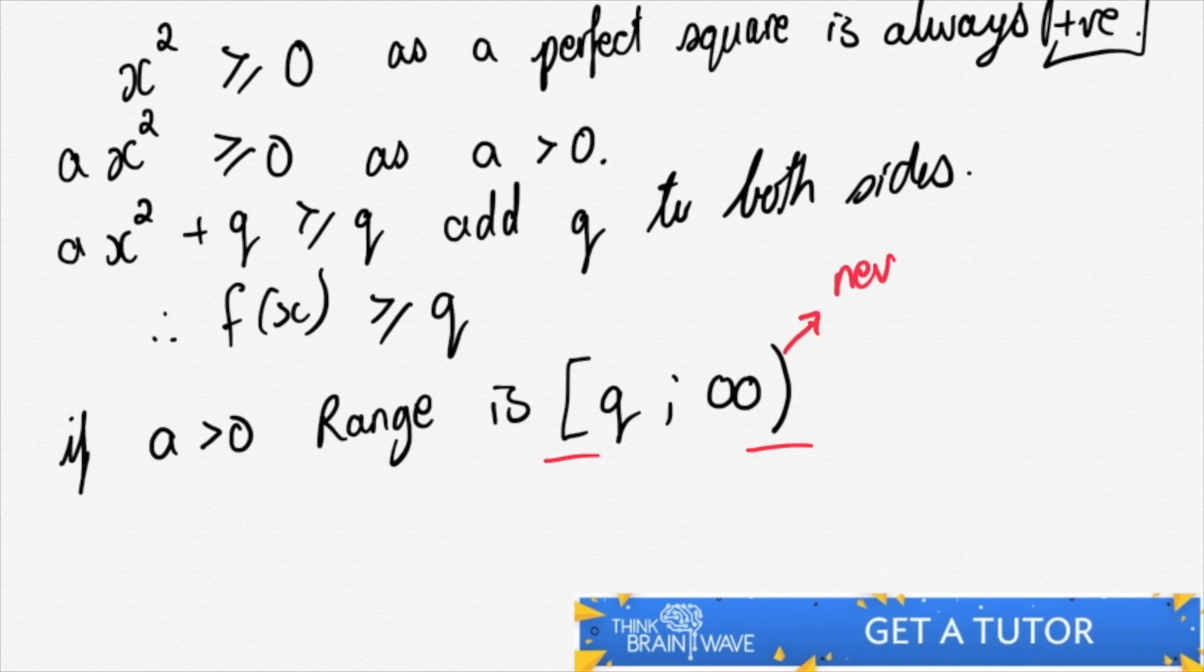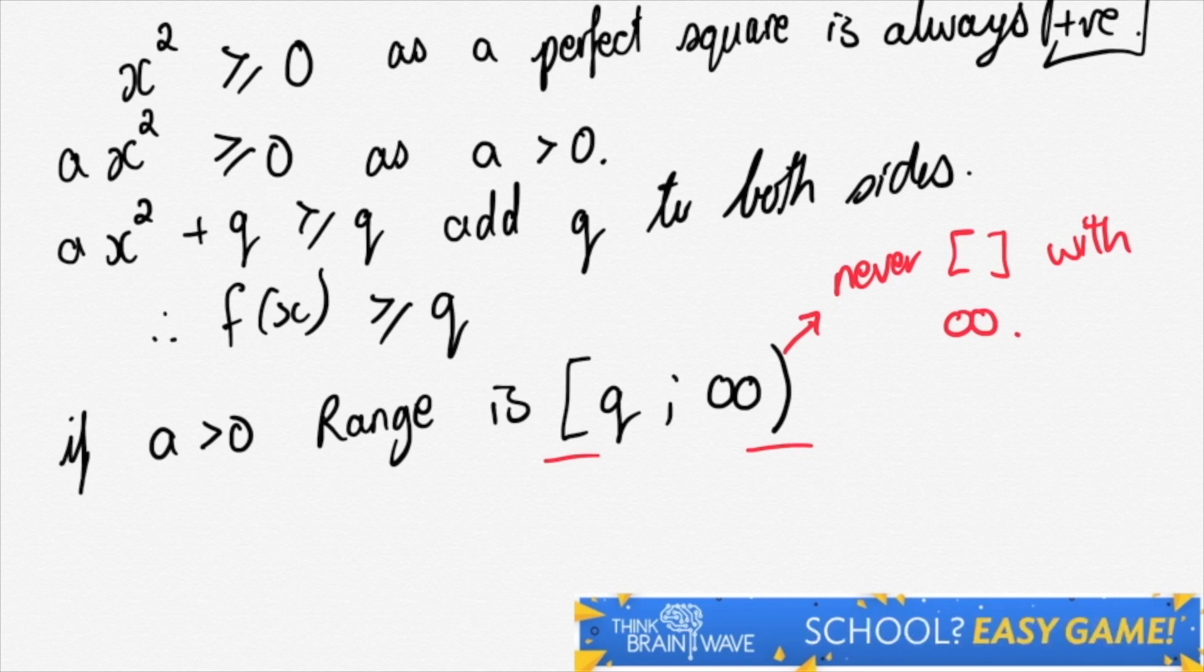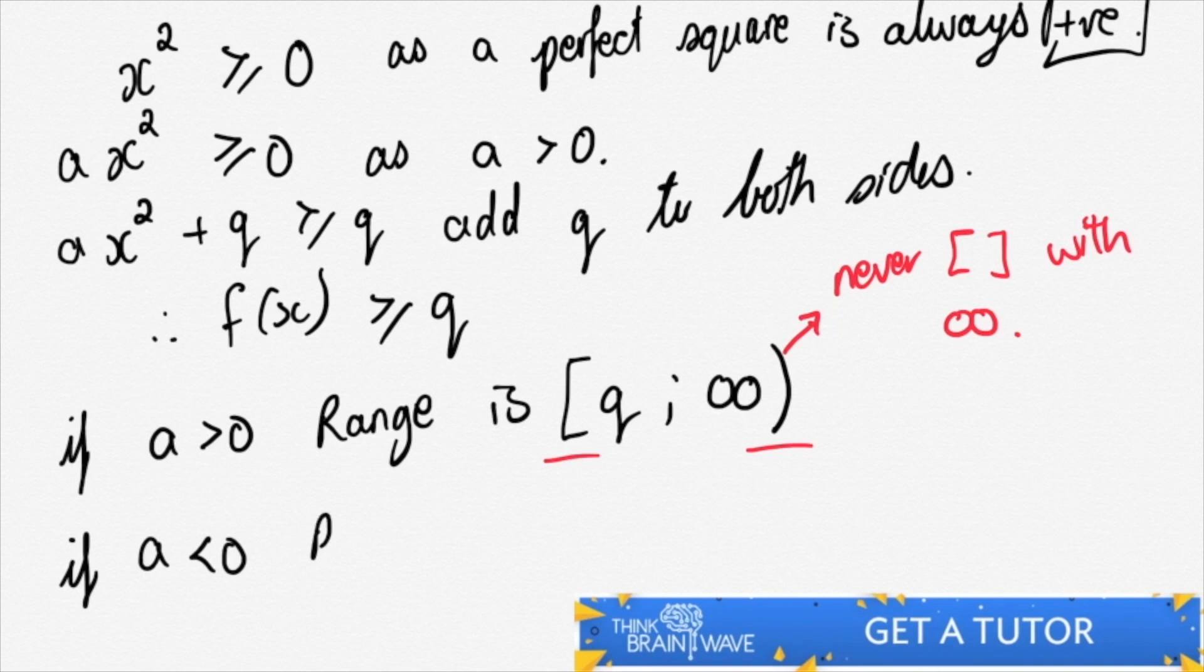This means that the lowest part of the graph would be the value q. And you can never ever use square brackets with infinity. You can only use round brackets for that particular side.